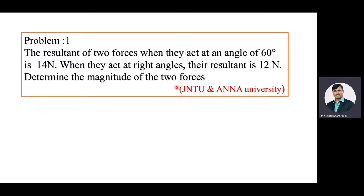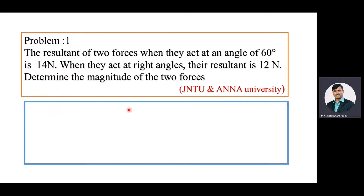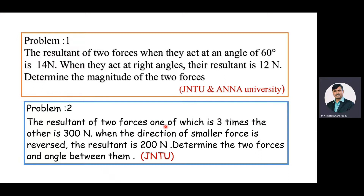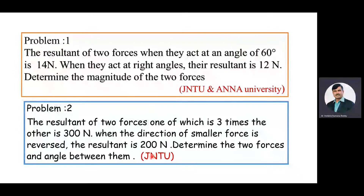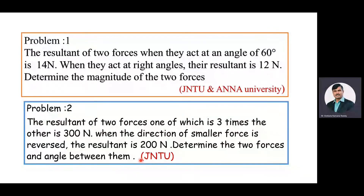This is a very important problem and it was asked many times under JNTU and Anna University examinations. The second problem is: the resultant of two forces, one of which is three times the other, is 300 Newton. When the direction of the smaller force is reversed the resultant is 200 Newton. Determine the two forces and angle between them. This is also a very important problem asked under JNTU University examinations. Now we will move towards the first problem.